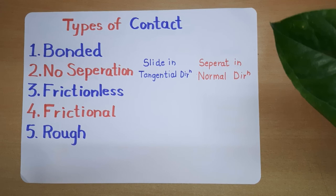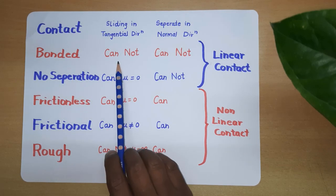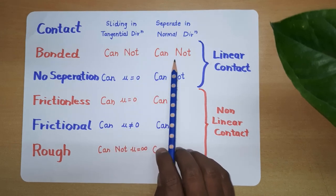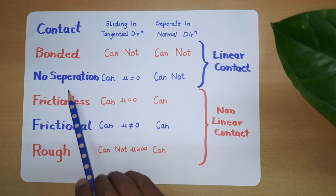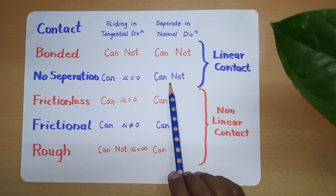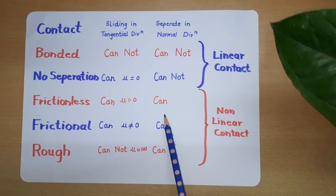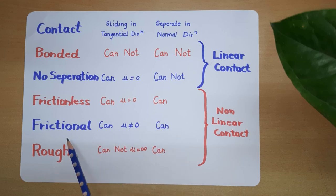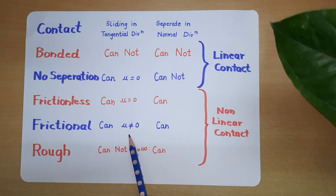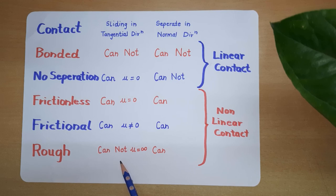Now let's understand this in table format. Bonded contact cannot slide in the tangential direction and cannot separate in the normal direction. No separation contact can slide in the tangential direction freely but cannot separate in the normal direction. Frictionless contact can slide in the tangential direction without friction and can also separate in the normal direction. Frictional contact allows bodies to slide in the tangential direction with a coefficient of friction not equal to zero, and can also separate in the normal direction. Rough contact has a coefficient of friction of infinity — it cannot slide in the tangential direction but can separate in the normal direction.